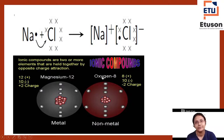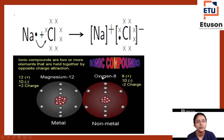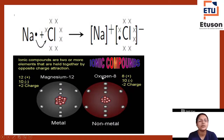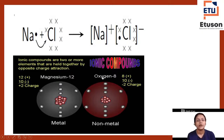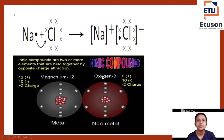Oxygen's outer shell has 6 electrons — it needs 2 more to complete its shell to 8. So oxygen gains 2 electrons and magnesium loses 2 electrons. This is the way through which they bond — ionic bonding. The only way to know this is by remembering the atomic number and knowing how to write the electronic configuration.